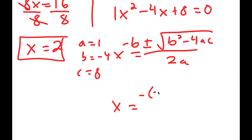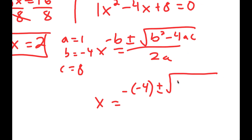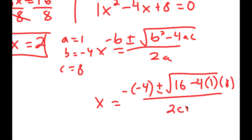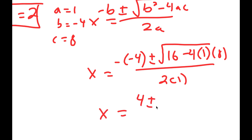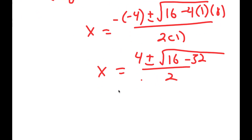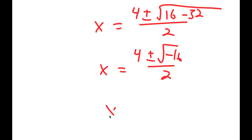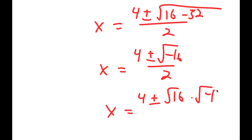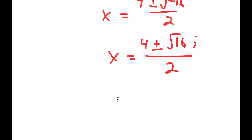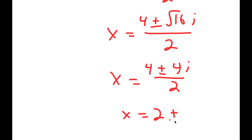So I get x is equal to negative of negative 4, plus or minus the square root of negative 4 squared, which is 16, minus 4 times a, which is 1, times c, which is 8, all over 2 times 1. This turns into positive 4 plus or minus the square root of 16 minus 32 over 2, which is equal to 4 plus or minus the square root of negative 16 over 2. The square root of negative 16 is the same as the square root of 16 times the square root of negative 1, and the square root of negative 1 is the imaginary number i. So I get 4 plus or minus 4i over 2, which is equal to 2 plus or minus 2i.